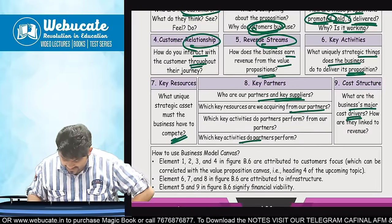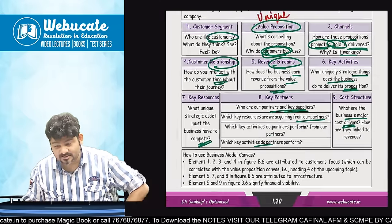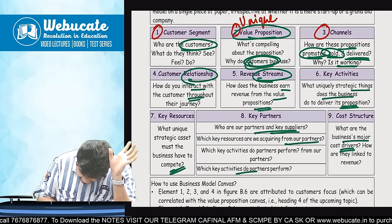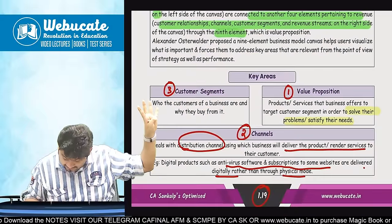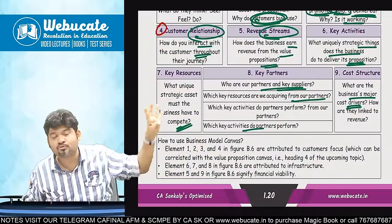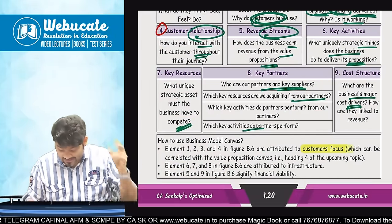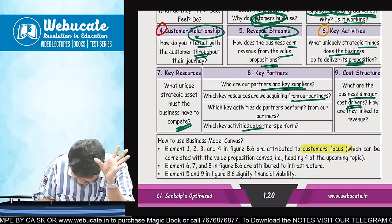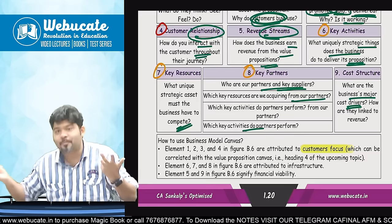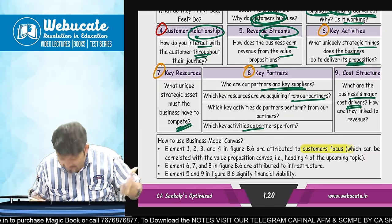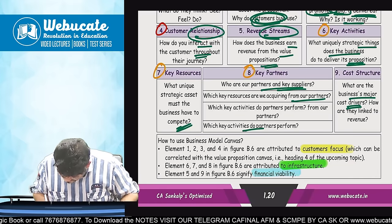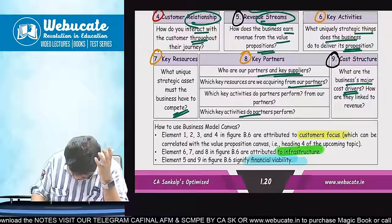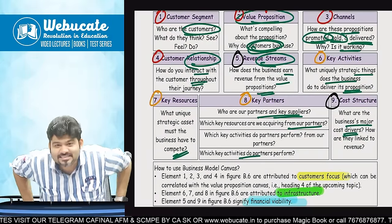And if you go down, there is a very nice thing they have given — and this is where a question can come through your MCQ. The initial four elements — one, two, three, and four — which are value proposition, channels, customer relationship, and customer segment — are focused on the customer. Elements six, seven, and eight — key activities, key resources, key partners — are attributed to the infrastructure, day-to-day working, operational system. And last is my financial viability, which is revenue minus cost — elements five and nine: revenue streams and cost structure. We complete Osterwalder's Business Model — nine elements.